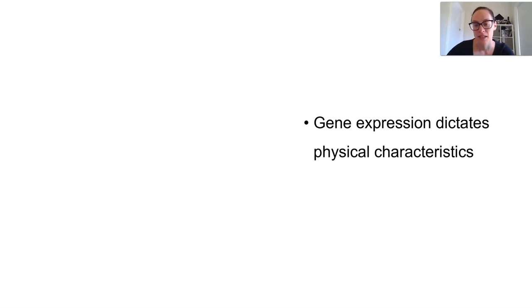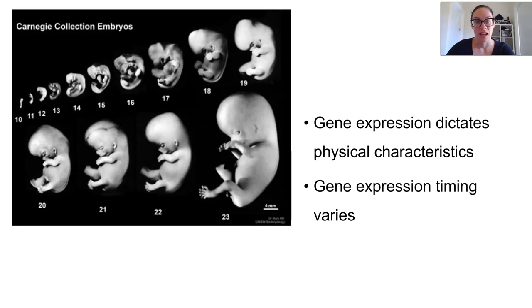The genes that are expressed will dictate what physical characteristics an organism has. Some genes need to be expressed early on in life, say at embryonic development. Others need really only to be made later on, say when puberty hits.